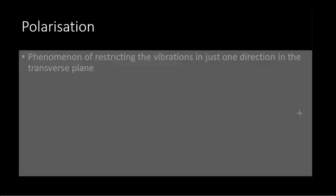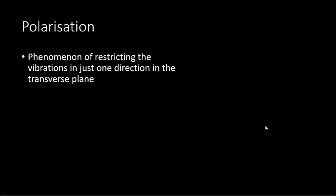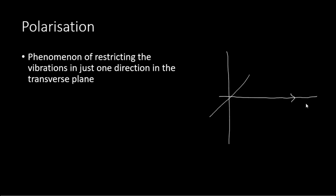Let me consider transverse waves. The light is progressing in this direction, that is along its axis. Let me say this is the y-axis and this is the z-axis. The light is travelling from the origin along the x-axis. They vibrate at a perpendicular plane to the progress of the light, and that is why they are called transverse vibrations.